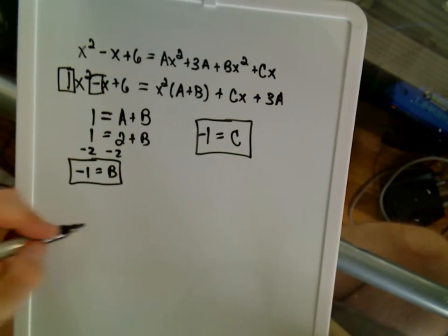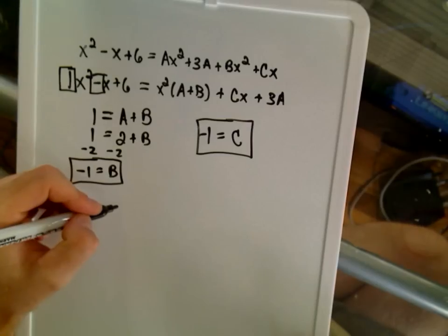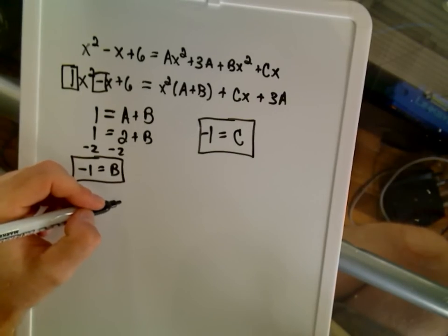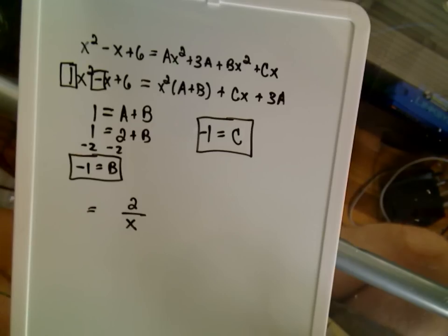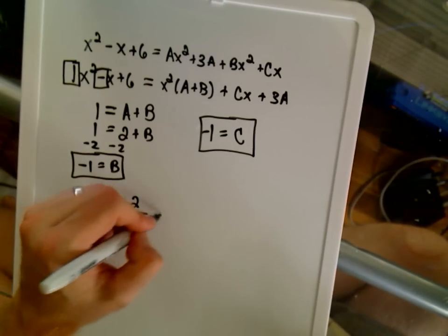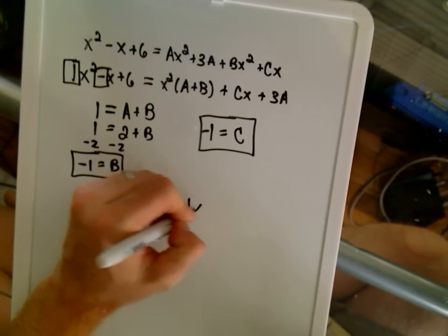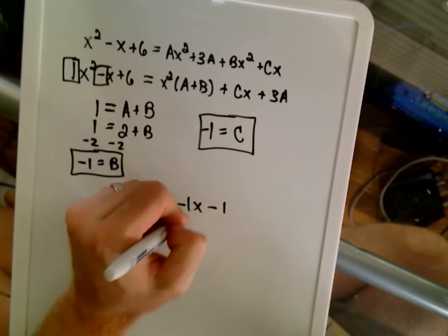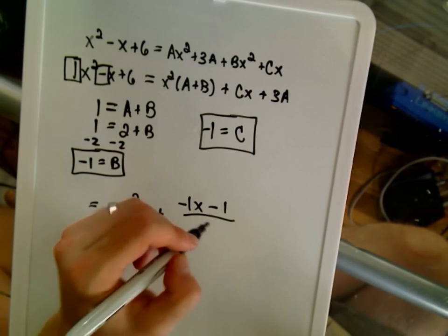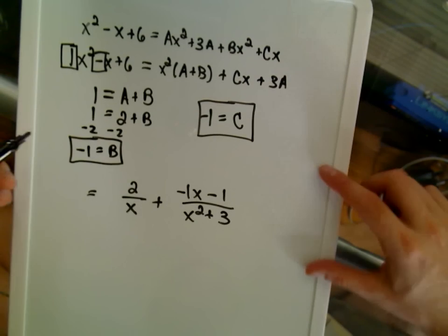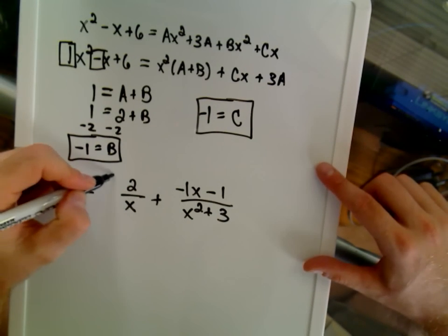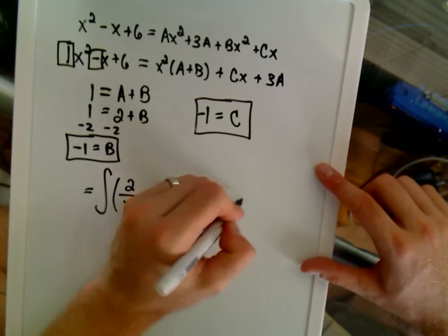Okay, so really, it said we had to integrate A over x. Well, we said A was 2, so now we're integrating 2 over x. And then we said B was negative 1, and we said C is also negative 1 over x squared plus 3. So there's our partial fraction decomposition. And again, this is the stuff that we actually want to integrate.